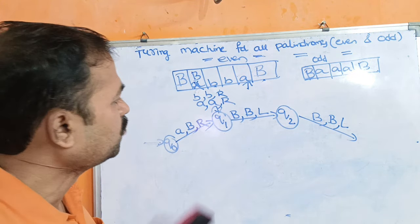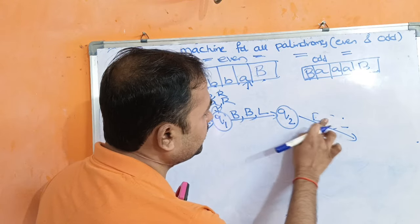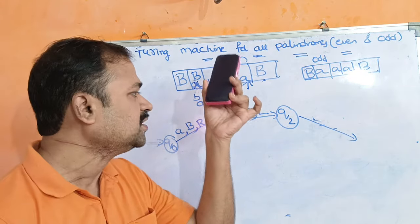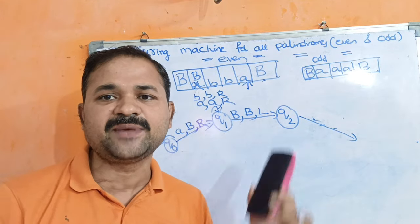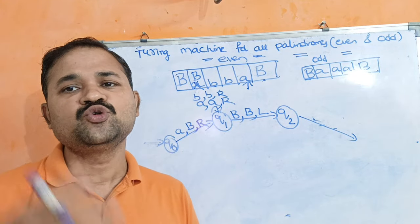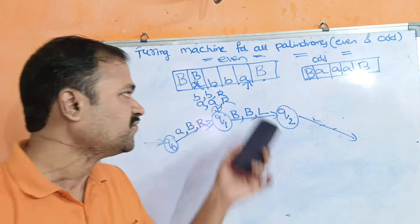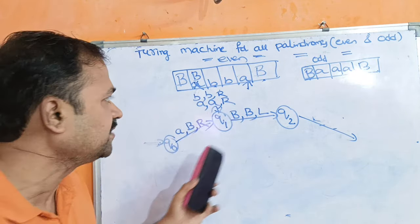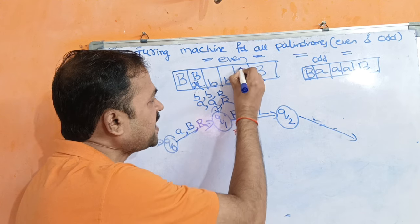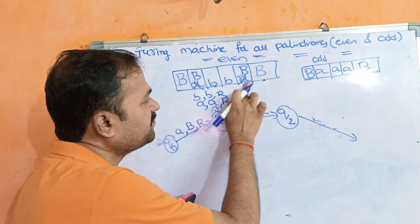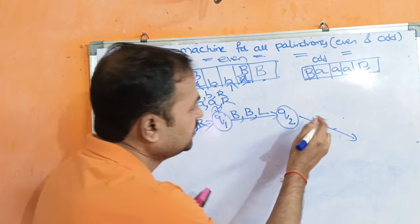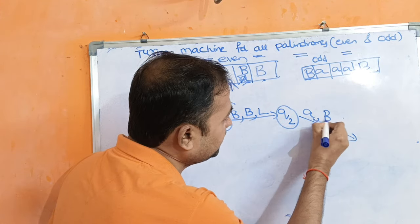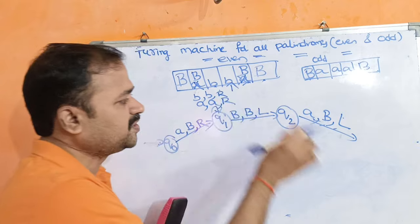Moving left, we are now at Q2 state. If we read blank on Q2, don't change it but move the head towards the left. When we reach A, we replace this A by blank symbol and move the head one position to the left, because this A corresponds to the matching first A.